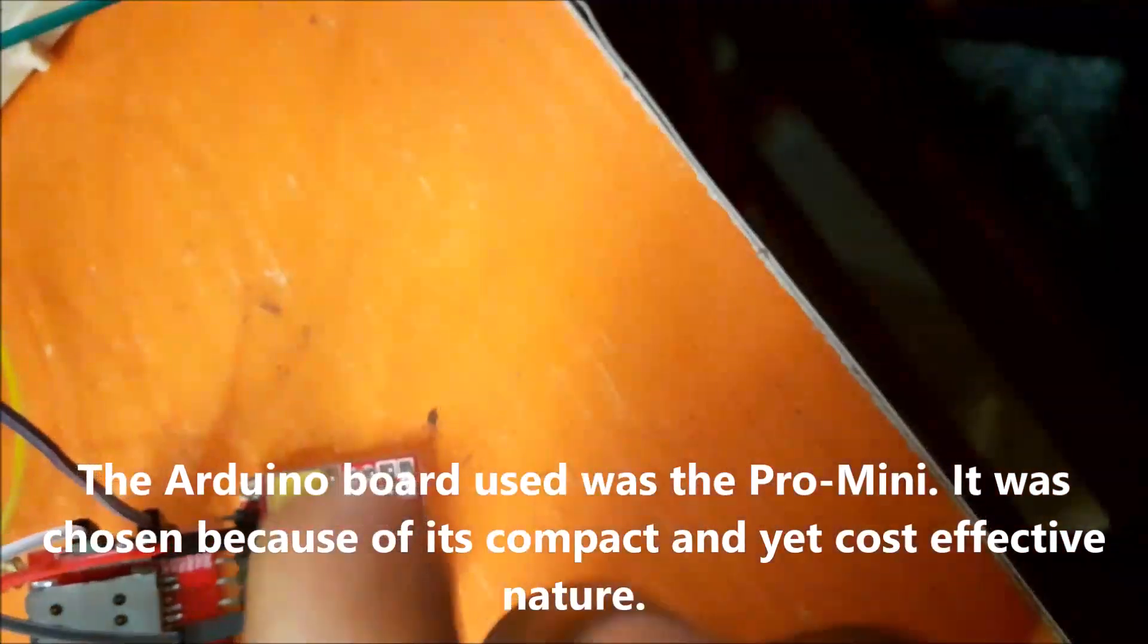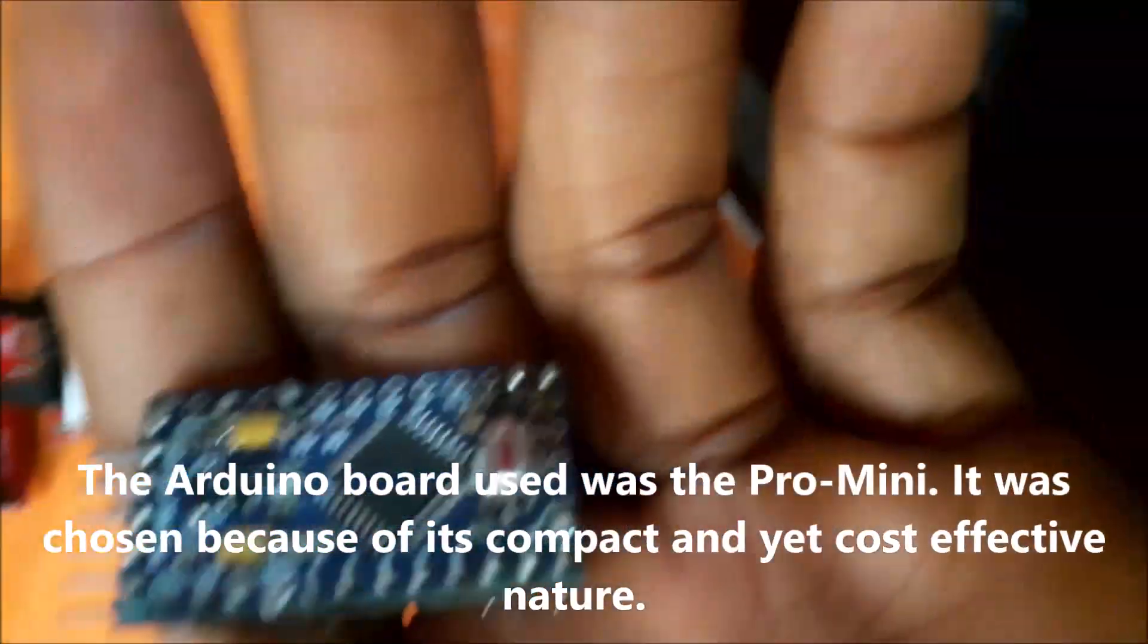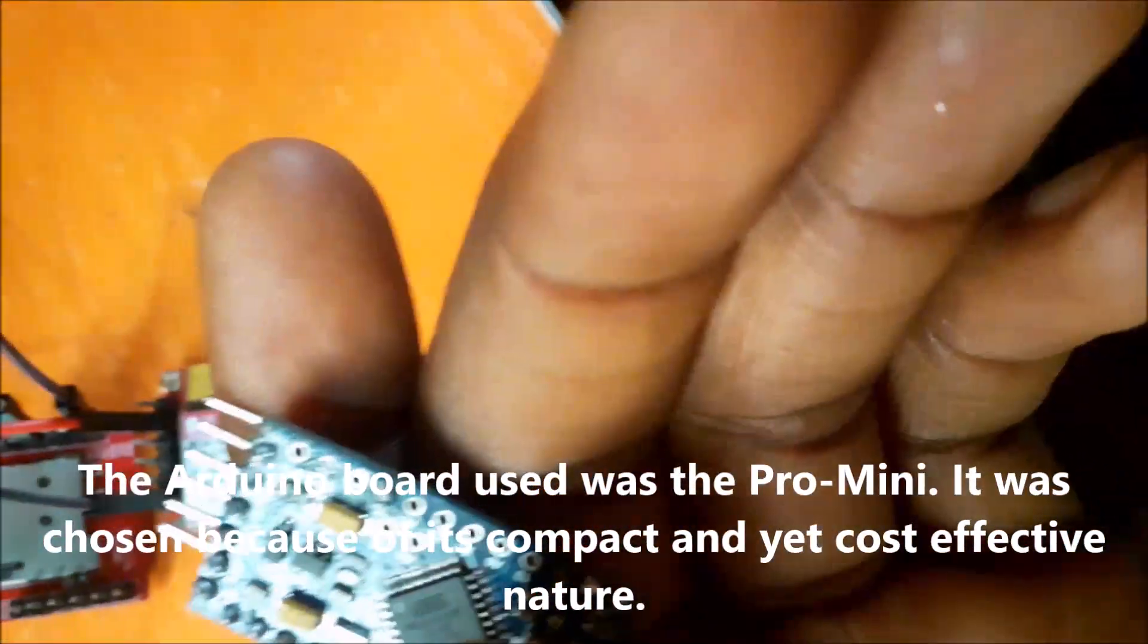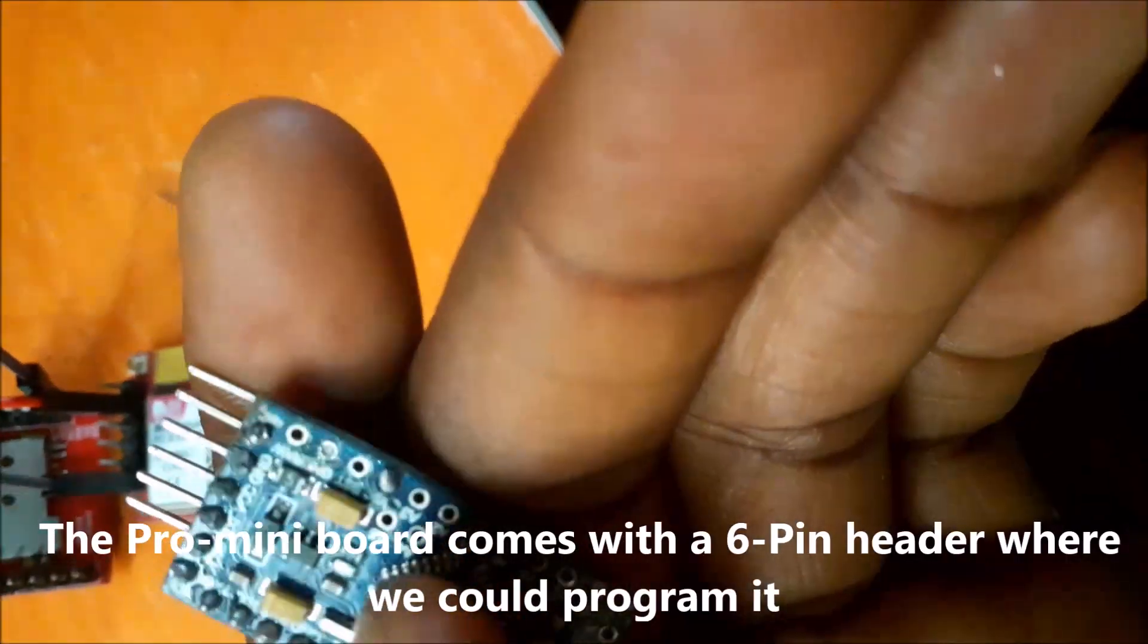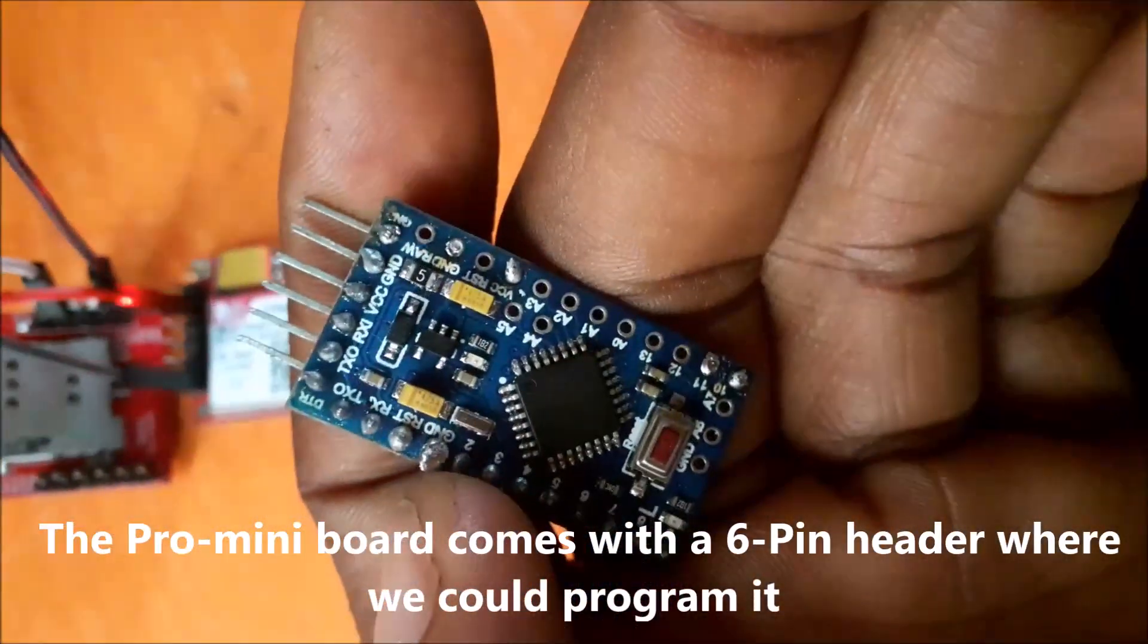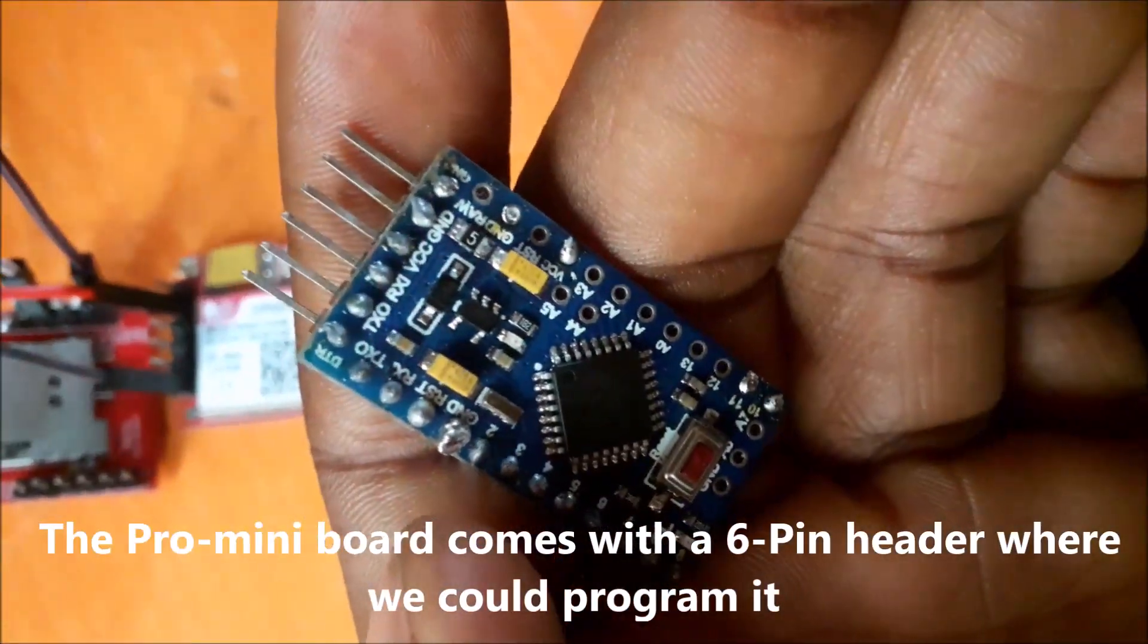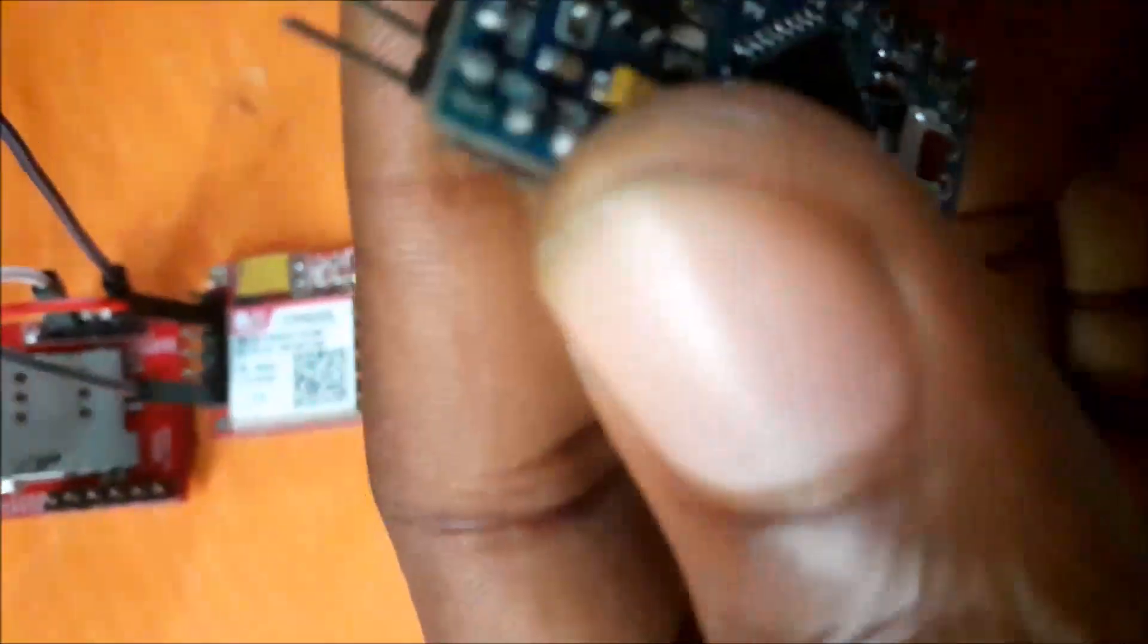The Arduino board used was the Pro Mini. It was chosen because of its compact and yet cost-effective nature. The Pro Mini board comes with a 6-pin header where we could program it. This is shown here. We can connect the FTDI programmer to it and upload the Arduino program.